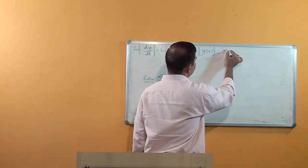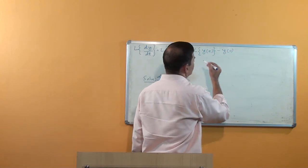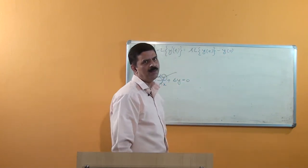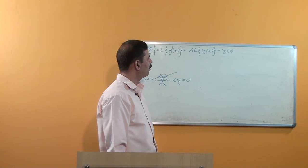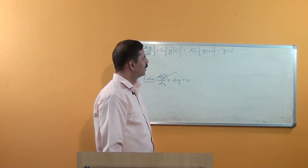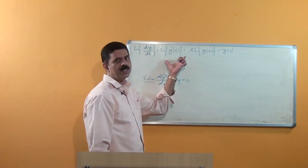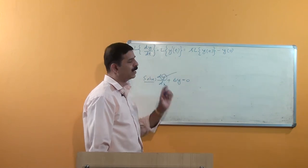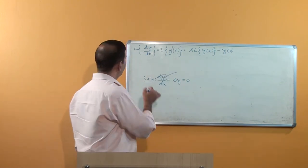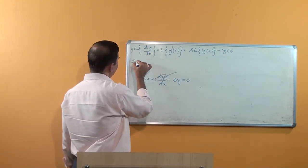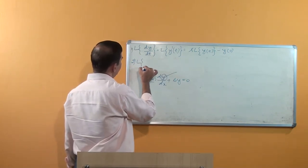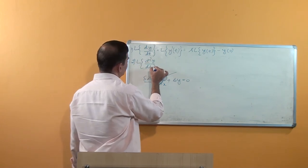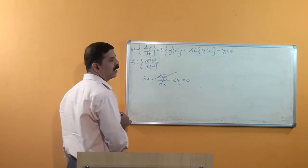Here y(0) is given to you as the initial value in the initial value problem. This is a result — a theorem — but for now take it as formula number one. For the second order differential equation, we have a second formula.